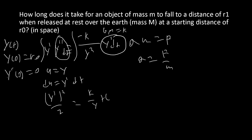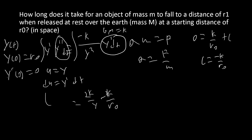Now we plug in our initial conditions. We have y' = 0 and y = r₀, so 0 = k/r₀ + C, which means C = -k/r₀. We plug that in, multiply by 2, and take the square root. Note that k is positive, y is positive, r₀ is positive, and y ≤ r₀, so the inside of the square root is always positive — our square root is valid. However, y' is always negative since the object only ever moves toward the Earth. So y' equals the negative square root. This gives us a nice separable differential equation.